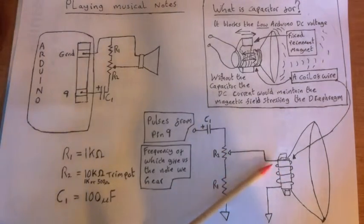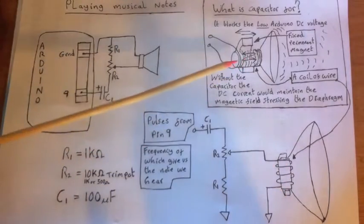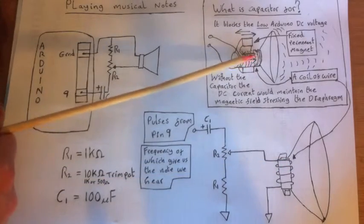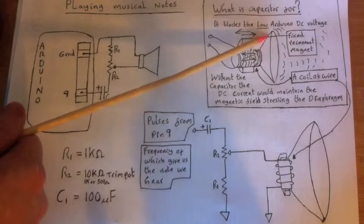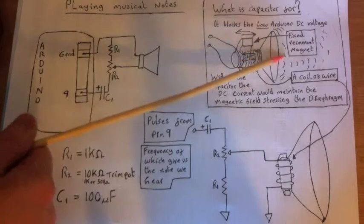Now a speaker is basically a coil of wire which is wrapped around a cylinder. I've redrawn it here. So this coil of wire is wrapped around this cylinder, and on the end of the cylinder is a paper diaphragm. The diaphragm is just lightly connected to the frame of the loudspeaker, so it allows it to vibrate.